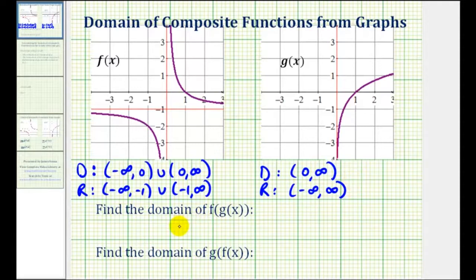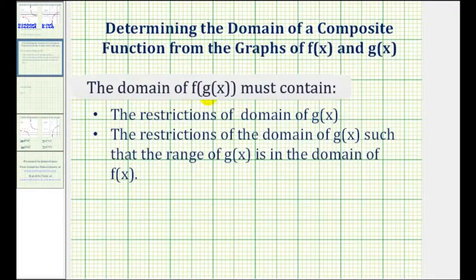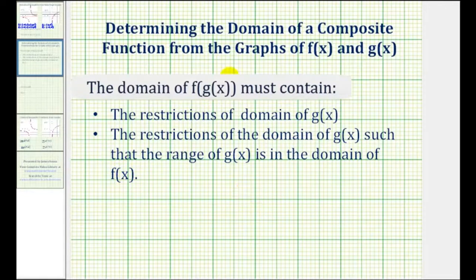Now let's consider the domain of our composite functions. The domain of f of g of x must contain the restrictions of the domain of the inner function g of x, and the restrictions of the domain of g of x such that the range of g of x is in the domain of the outer function f of x. We start with the domain of the inner function, and because the output of the inner function becomes the input into the outer function, we may have more restrictions on the domain of our composite function if the outputs of g are not possible inputs into f.